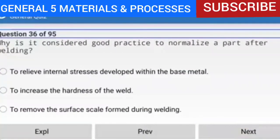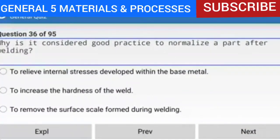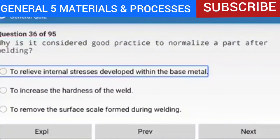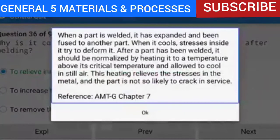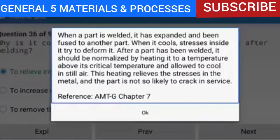Question 36 of 95: Why is it considered good practice to normalize a part after welding? To relieve internal stresses developed within the base metal. When a part is welded, stresses inside try to deform it as it cools. After welding, the part should be normalized by heating it above its critical temperature and allowing it to cool in still air. This heating relieves the stresses and the part is less likely to crack in service. Reference: AMTG Chapter 7.